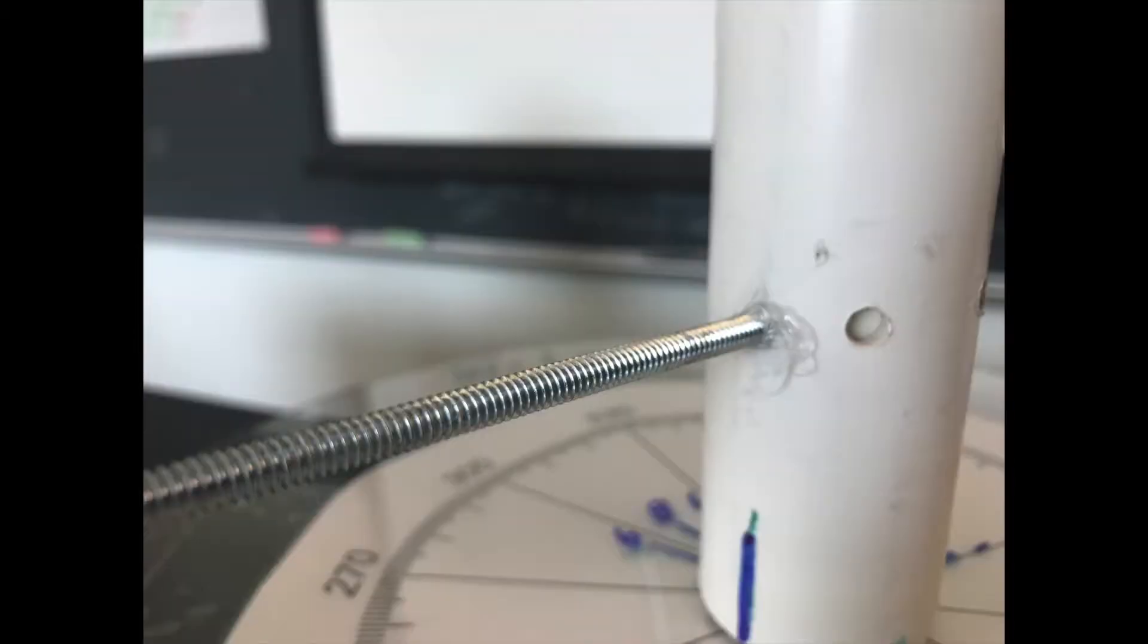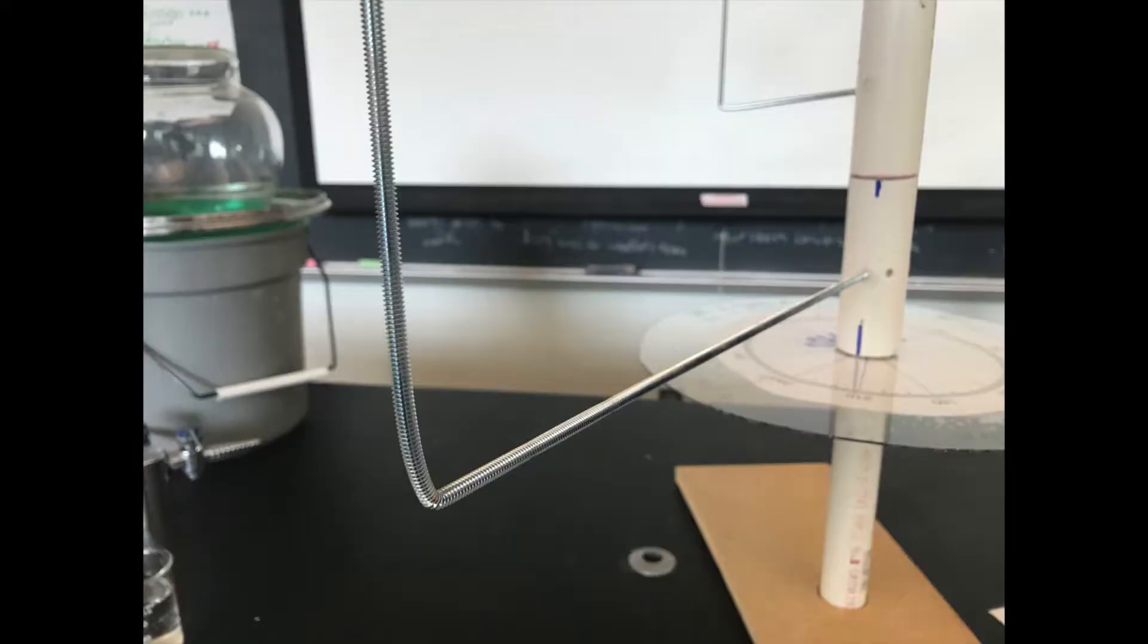Holes were drilled into one side of each of the two spinning pipes to hold rods bent at 90 degrees that would be supporting the two planets. Then we screwed the rods into the holes and hot glued them in place.